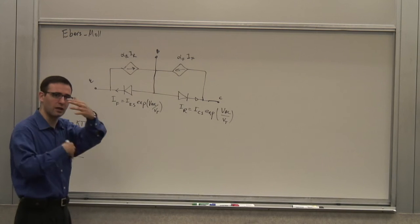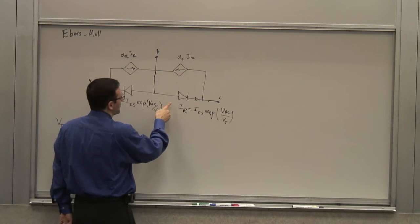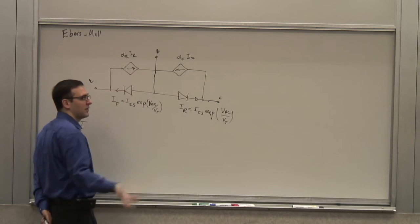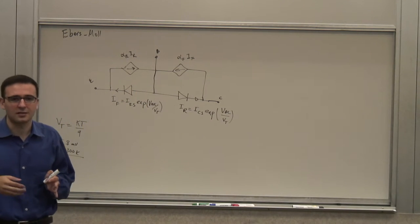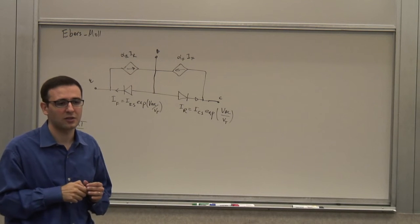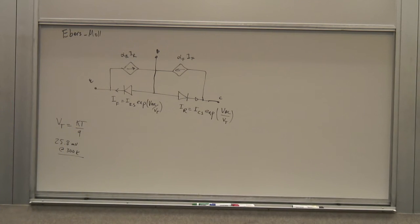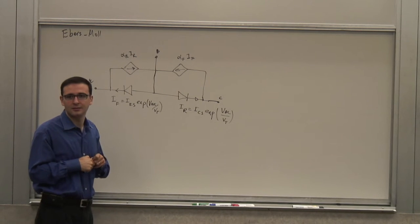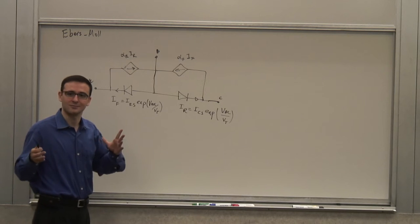There's also the reverse active region — when the collector-base is forward biased and the emitter-base is reverse — which is kind of a poor transistor. There used to be some applications like I²L logic that used the reverse mode, but nowadays we rarely use that mode of operation unless by mistake.